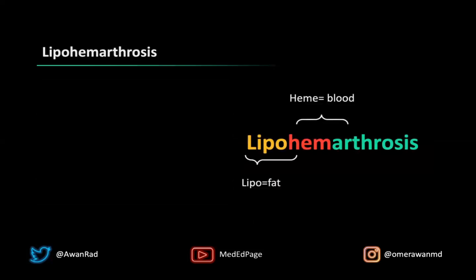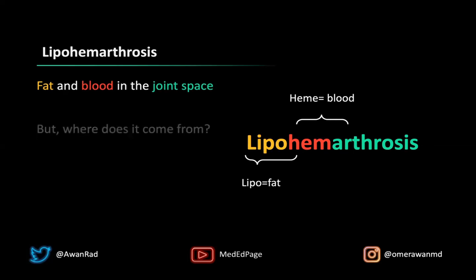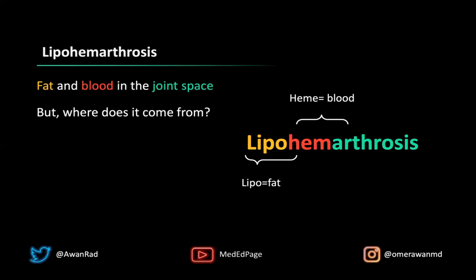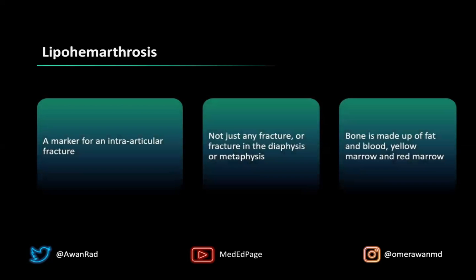When we talk about lipohemarthrosis, it means exactly what its name implies: lipo for fat, heme for blood, and arthrosis for joint — so fat and blood within the joint space. The question is where is this fat and blood coming from? How is it getting into the suprapatellar recess and joint space? It's actually coming from the bone itself, because bone is made up of red marrow — blood — and yellow marrow — fat.